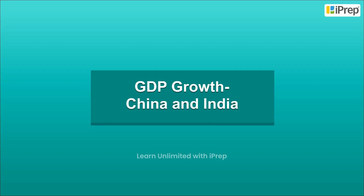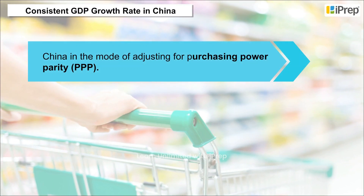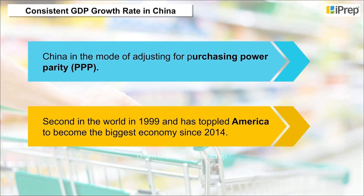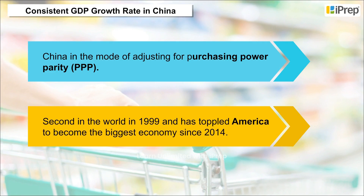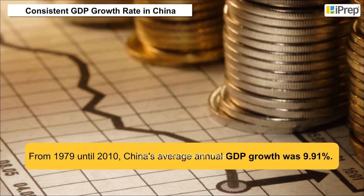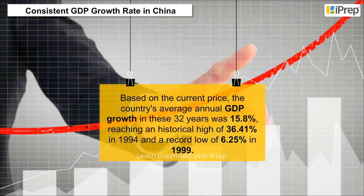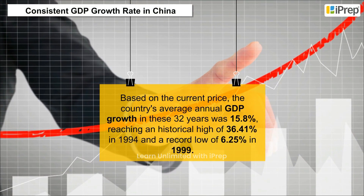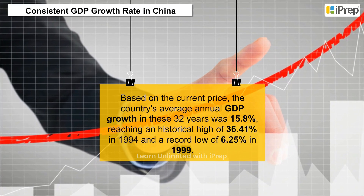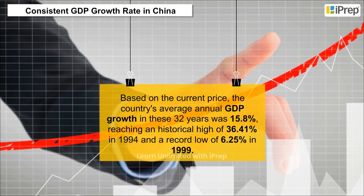GDP growth in China and India: China has seen consistent GDP growth. Adjusting for purchasing power parity (PPP), China became the second largest economy in the world in 1999 and toppled America to become the biggest economy since 2014. From 1979 until 2010, China's average annual GDP growth was 9.91 percent. Based on current prices, the country's average annual GDP growth over these 32 years was 15.8 percent, reaching a historical high of 36.41 percent in 1994 and a record low of 6.25 percent in 1999.